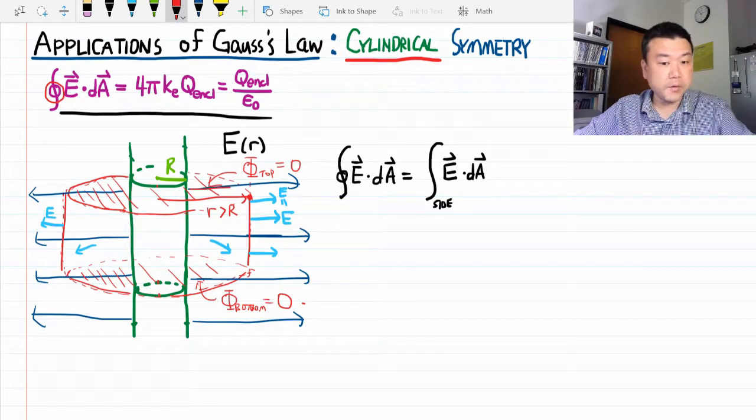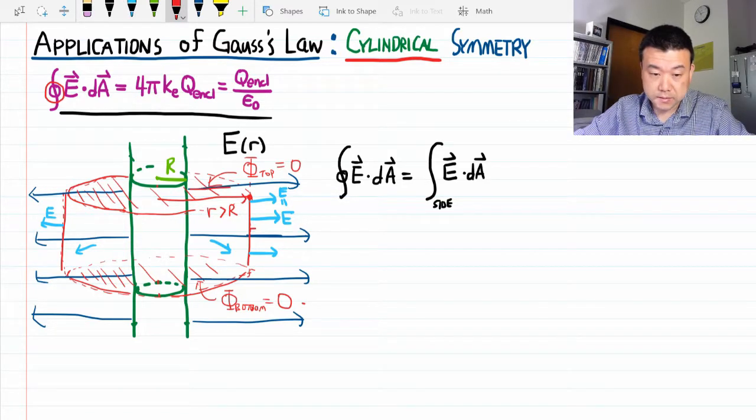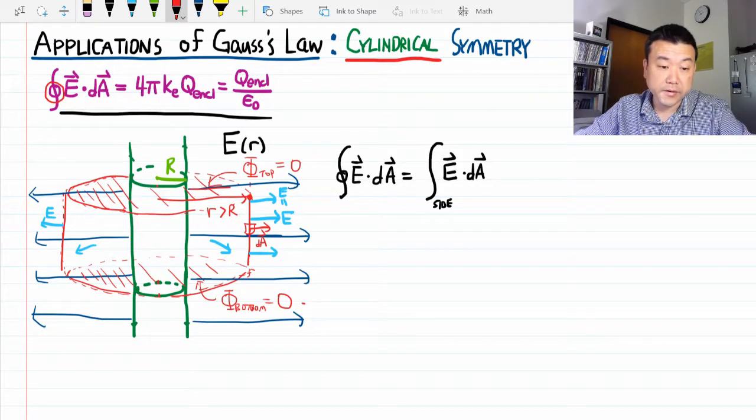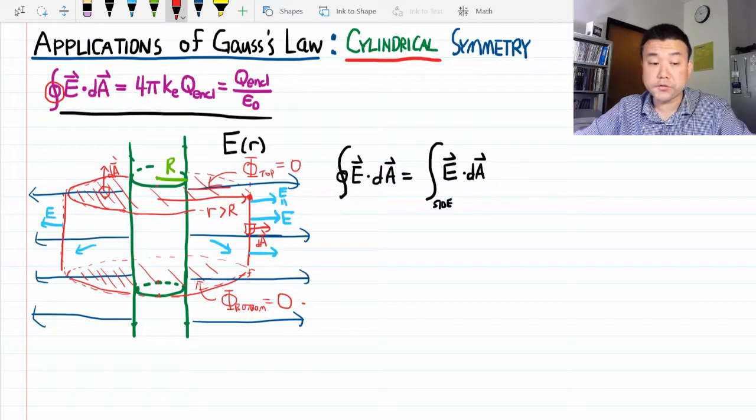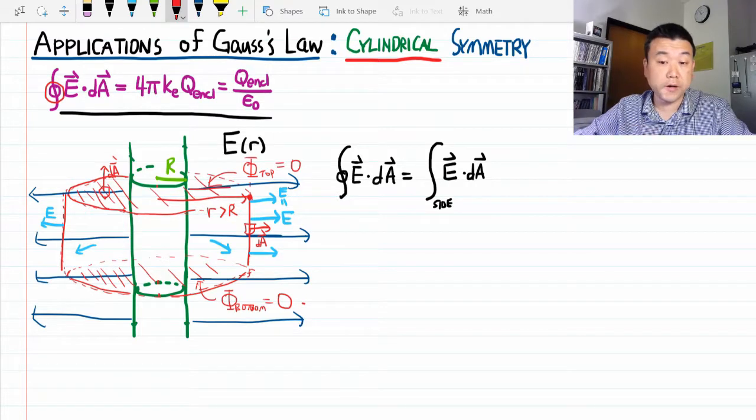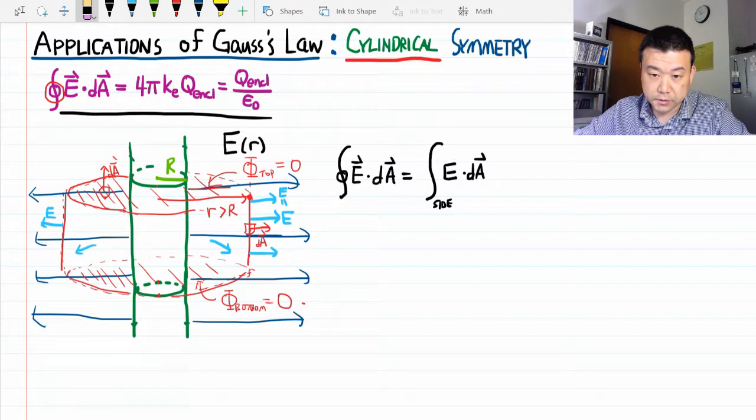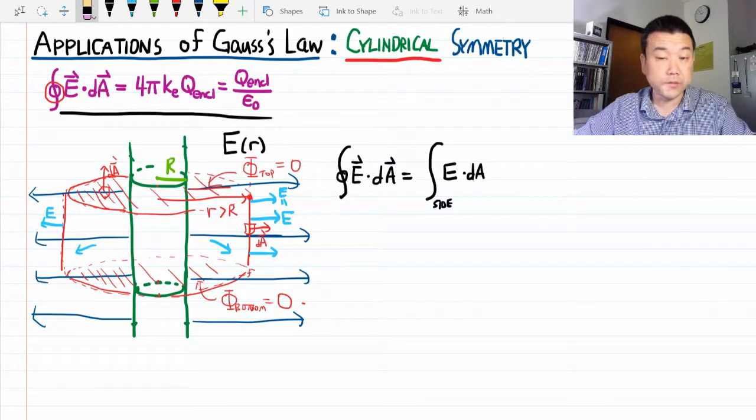Like with the sphere, we have a happy coincidence that the area element is directed in the same direction as the electric field. The area elements at the top and bottom surfaces are perpendicular to the electric field and contribute zero to the flux. That means we can get rid of the dot product and just deal with the magnitude of the electric field times the area element.